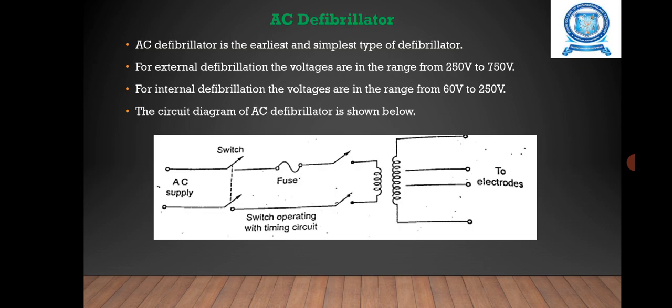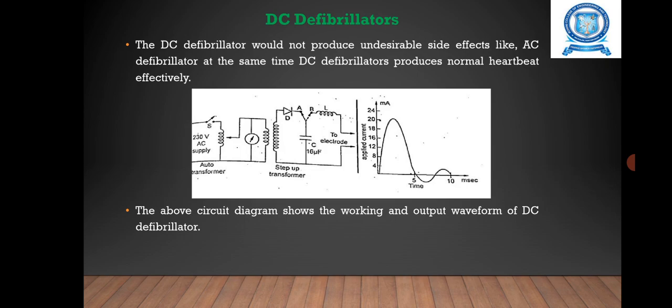The circuit diagram of the AC defibrillator consists of a step-up transformer with various tappings on the secondary. The timing circuit is a simple capacitor and resistor network. The duration of the counter shock may vary from 0.1 second to 1 second depending upon the voltage applied, with a frequency of 50 Hz. Large currents are required in external defibrillation for producing uniform and simultaneous contraction of the heart muscle fibers.